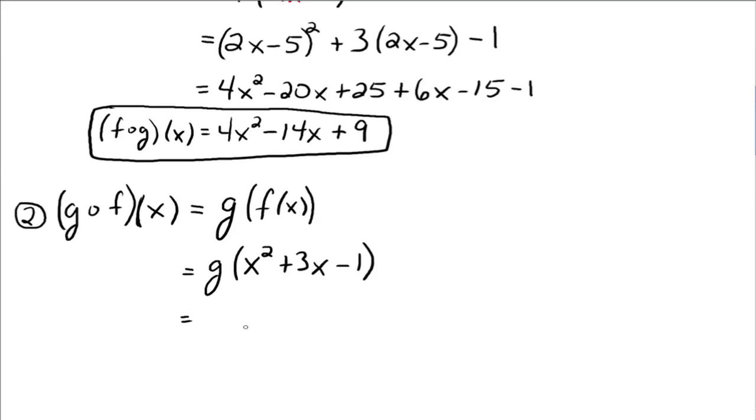So we get 2 times (x² + 3x - 1), and then minus 5, because we're replacing that x with x² + 3x - 1. And then you simplify. And so you get 2x² + 6x - 2 - 5 gives you a -7. Okay, and this is the function g of f of x.